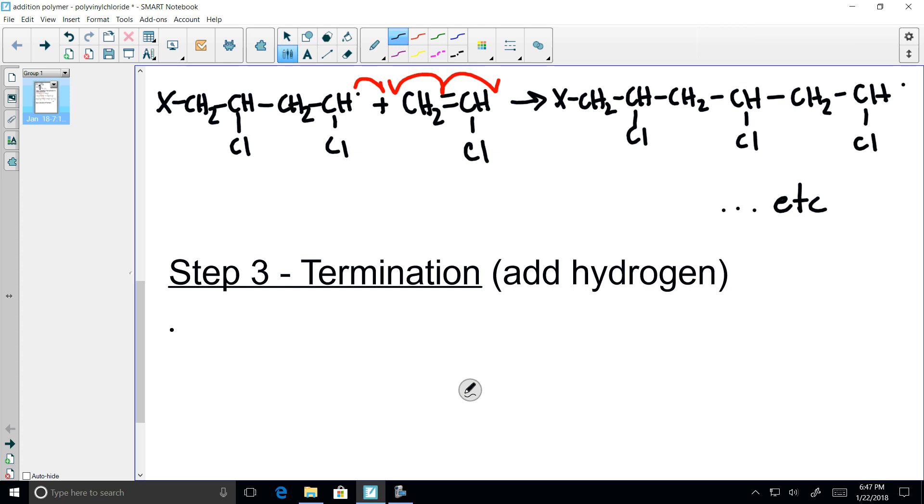We represent our polymer now by showing one initiator. We show one mer, which will bracket with square brackets, and outside will place n to show a polymer of n units long. We show one last mer, still in the free radical form.